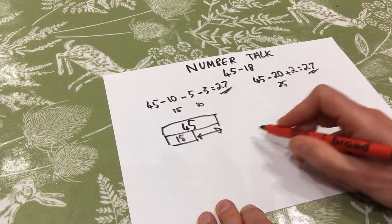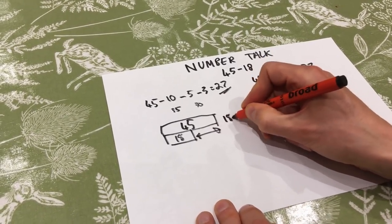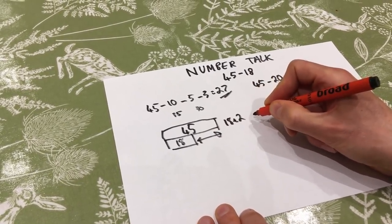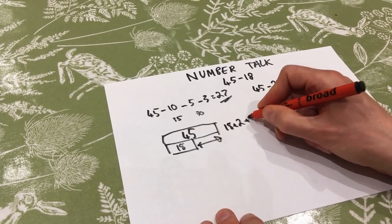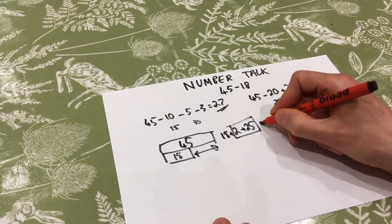So actually, the calculation is actually an addition. 18 add two is 20, and then 20 to 45, 25 is kind of easy to do that as an addition, I think. So equals 27.